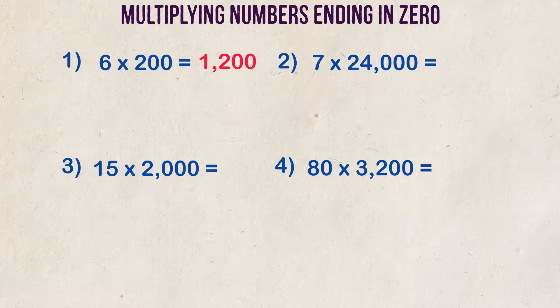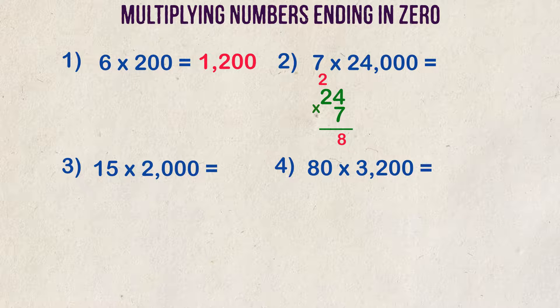Example 2: 7 times 24,000. Let's look at the same logic for this example. If we can line up 7 under 24 and multiply together, 4 times 7 is 28, put down the 8, carry the 2. We need to multiply 7 times 2 and get 14. Then we add the 2 and get 16. After the 16, we can add three zeros. 7 times 24,000 is equal to 168,000.